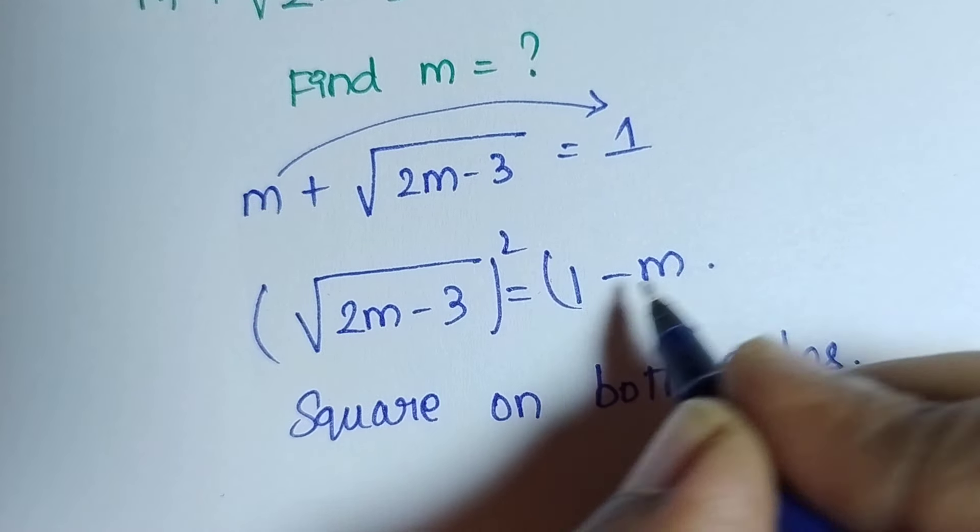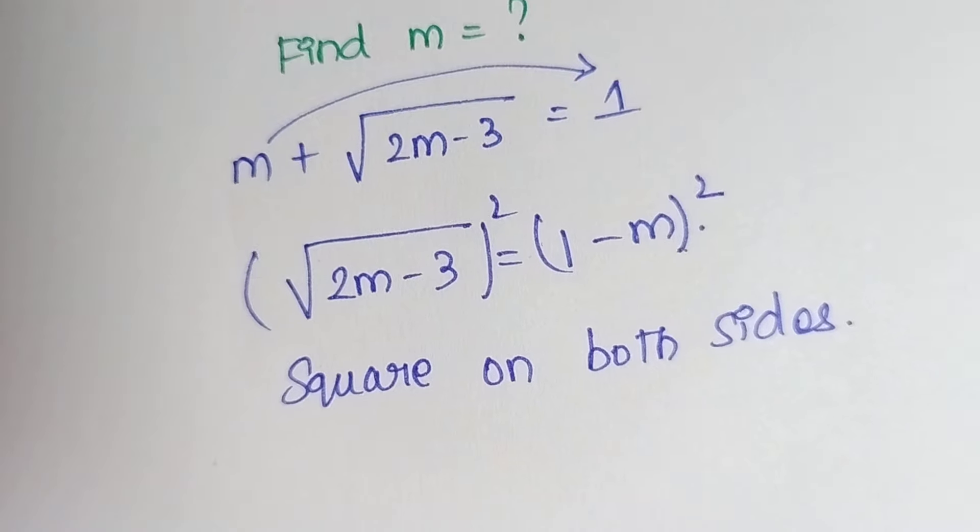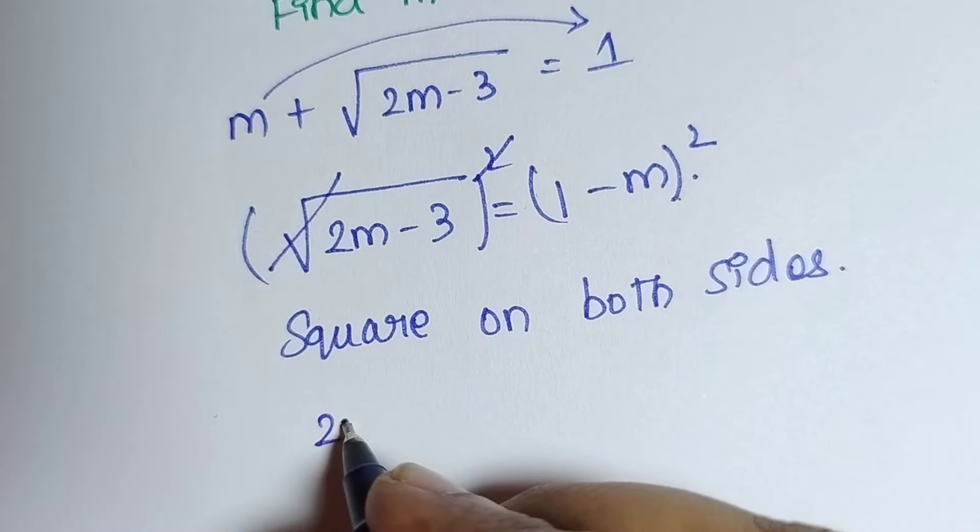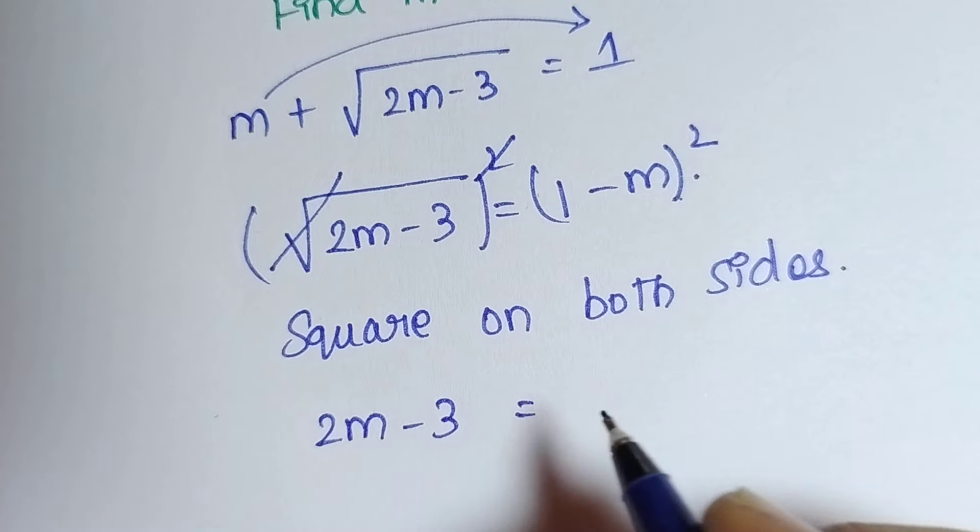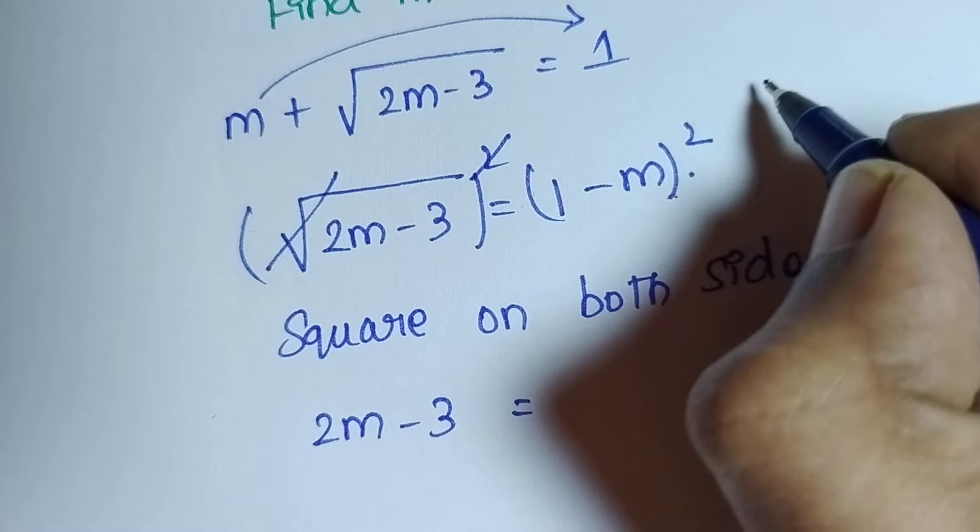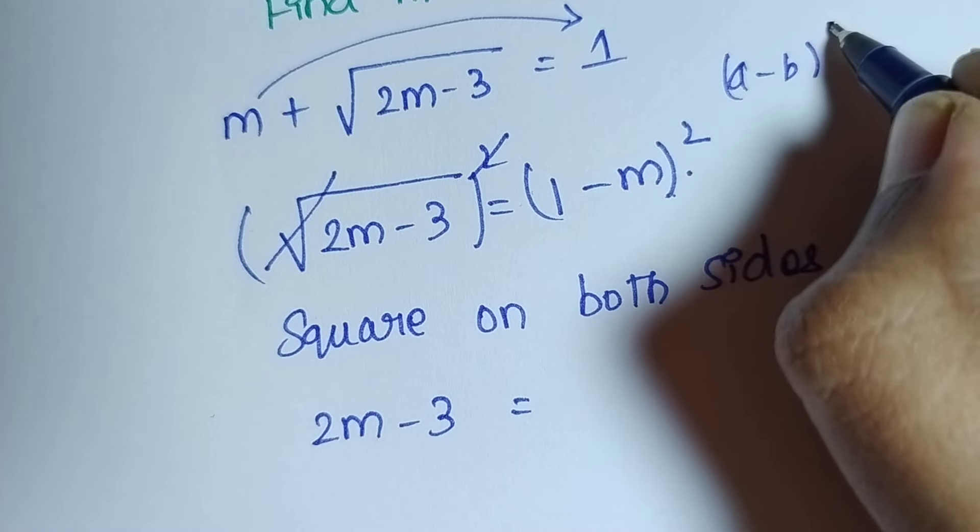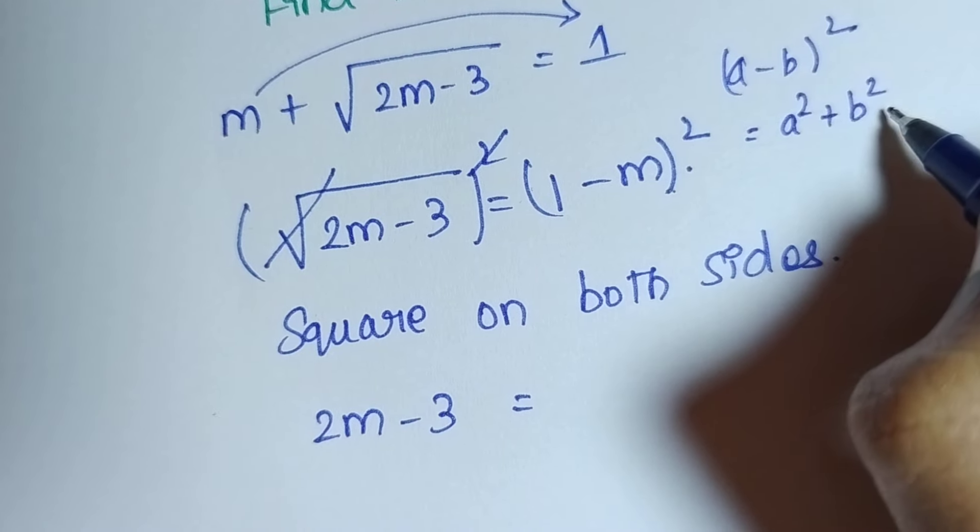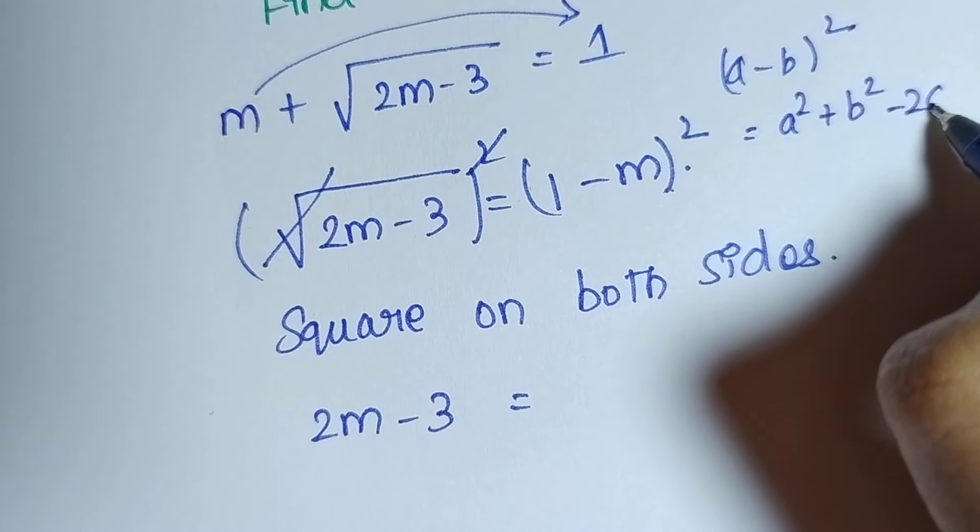Now I am going to take square on both sides. This root and square get cancelled and 2m minus 3 is there in left side. In right side, this is in the format of a minus b the whole square. The formula is a square plus b square minus 2ab.